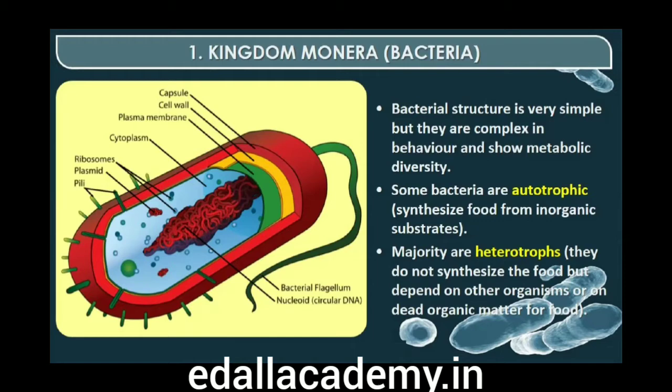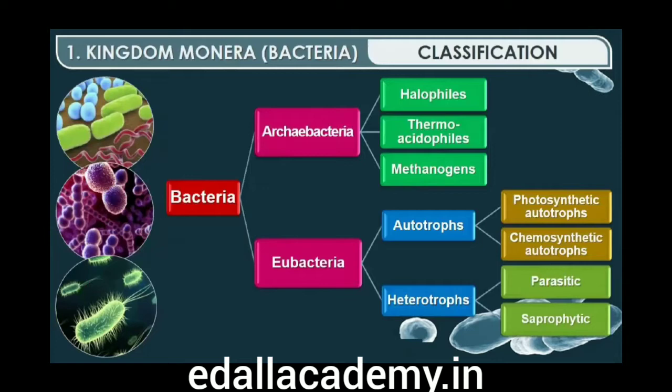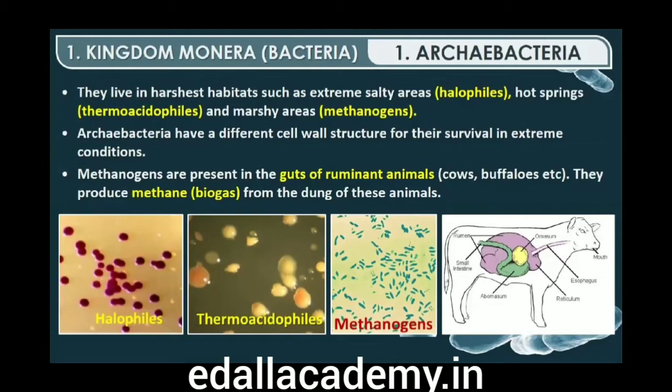First are archaebacteria. These bacteria are special since they live in some of the most harsh habitats such as extreme salty areas (halophiles), hot springs (thermoacidophiles), and marshy areas (methanogens). Archaebacteria differ from other bacteria in having a different cell wall structure, and this feature is responsible for their survival in extreme conditions. Methanogens are present in the gut of several ruminant animals such as cows and buffaloes and are responsible for the production of methane (biogas) from the dung of these animals.